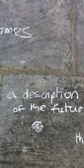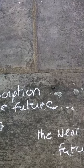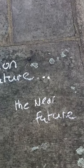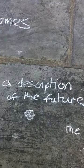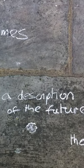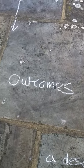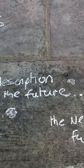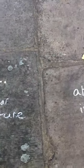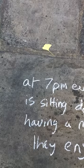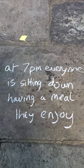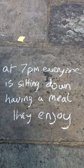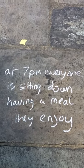Basically, an outcome is a description of the future — the near future if you like. It's a place we want to get to in a few days' time. An outcome describes that state. A classic example is this: at 7pm everyone is sitting down having a meal they enjoy. That would be an outcome that we want.